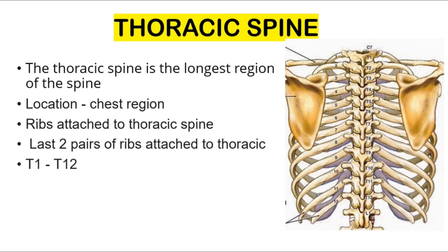The thoracic spine is the longest region of the spine, located at the chest region, where the ribs are attached. It runs from T1 to T12, and the last two pairs of ribs are attached to the thoracic spine. The thoracic spine supports the rib cage and is also called the mid back.